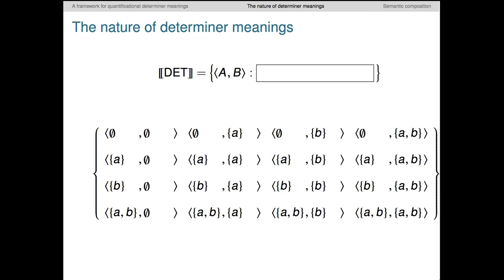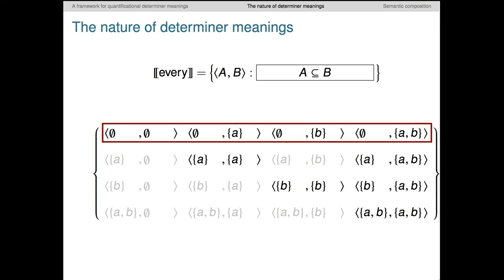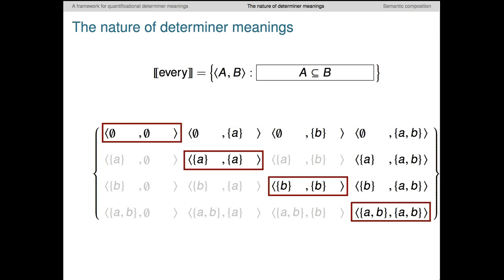So this diagram here has a regular structure. In each row, the first member is always the same in each pair. And in each column, the second member is always the same. This gives us the full space of pairs of sets. Determiners then identify subsets of this larger space. Here's every. I've just deleted all the pairs in which the first member is not a subset of the second. So the entire first row remains, because the empty set is a subset of every set. And all the identity pairs along the diagonal remain, because every set is a subset of itself.